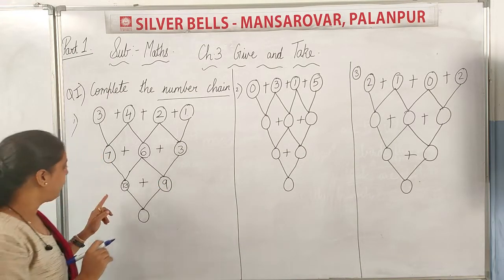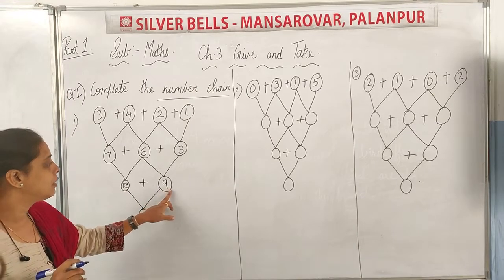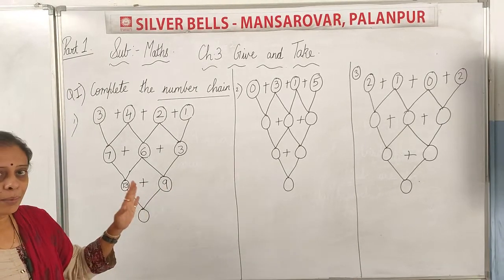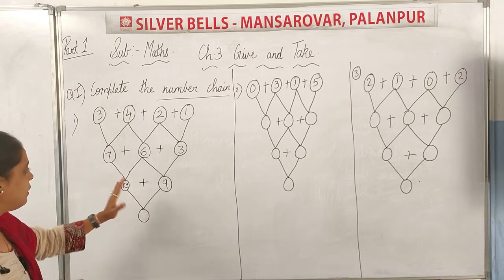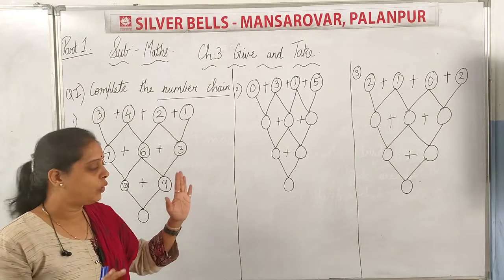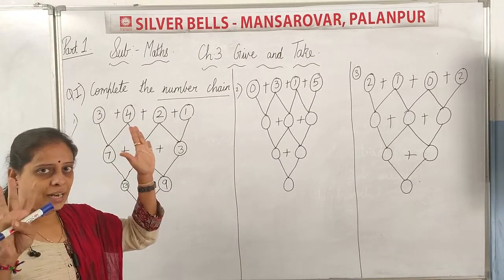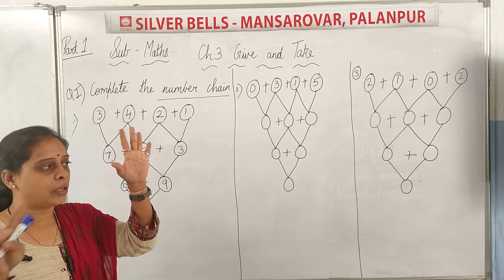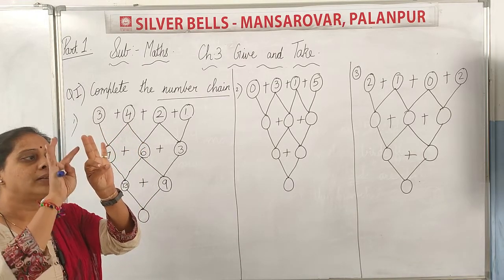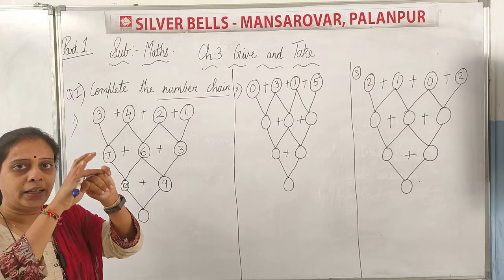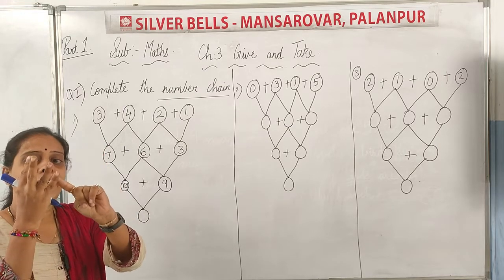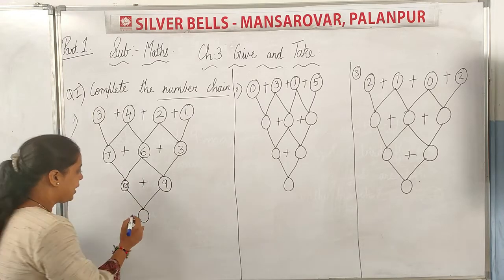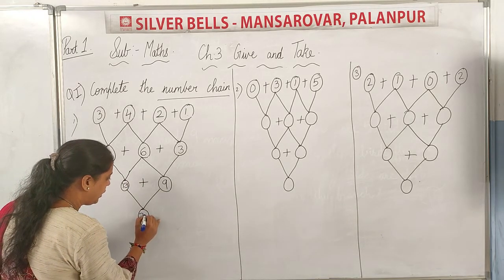Now you have to add 13 plus 9. You hold 13 and put up 9 fingers, then start counting: 14, 15, 16, 17, 18, 19, 20, 21, and 22. So the answer is 22.